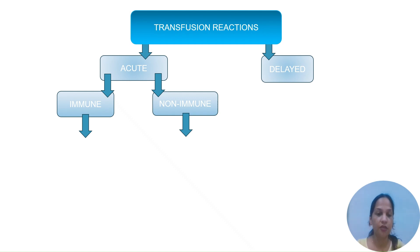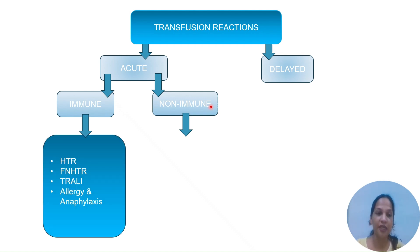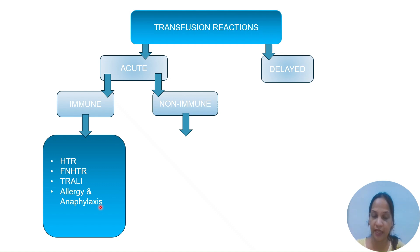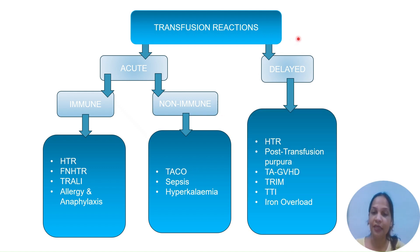Classification of transfusion reactions: we can classify reactions into acute and delayed types. Acute reactions occur within 24 hours of transfusion, whereas delayed reactions occur after 24 hours. All reactions can be immune or non-immune. Acute immune-mediated reactions include hemolytic transfusion reaction, febrile non-hemolytic transfusion reaction, TRALI, allergy, and anaphylaxis. Non-immune acute reactions include transfusion-associated circulatory overload (TACO), sepsis, and hypokalemia. In today's episode we will be dealing with acute transfusion reactions.